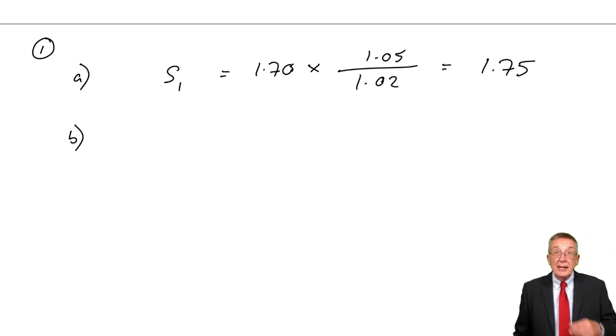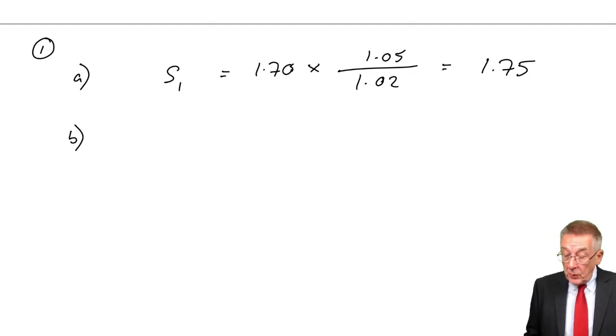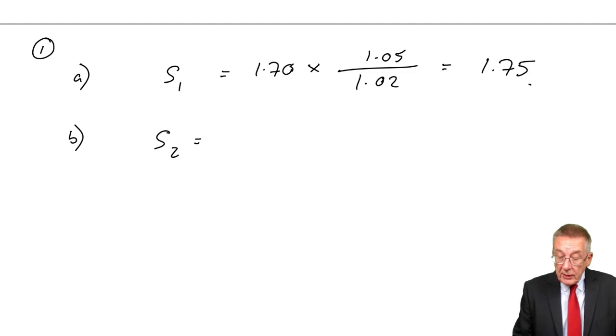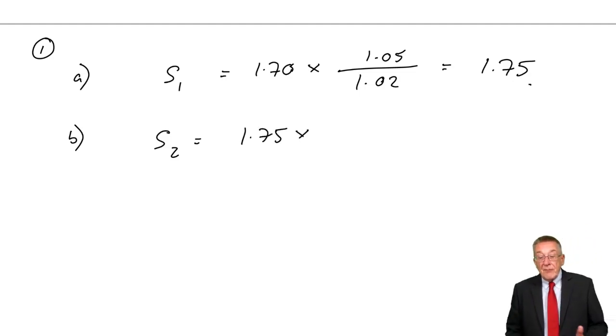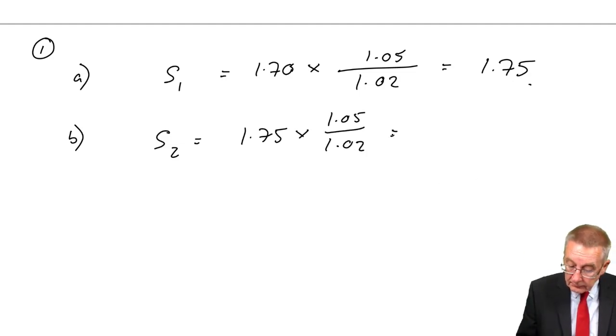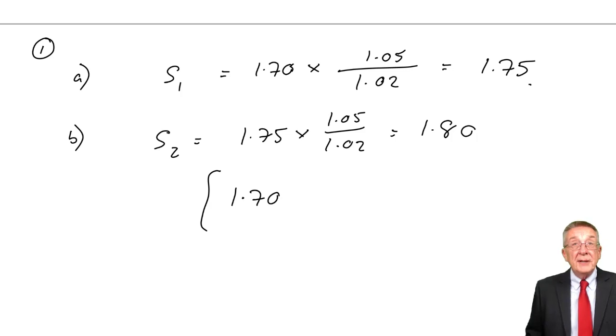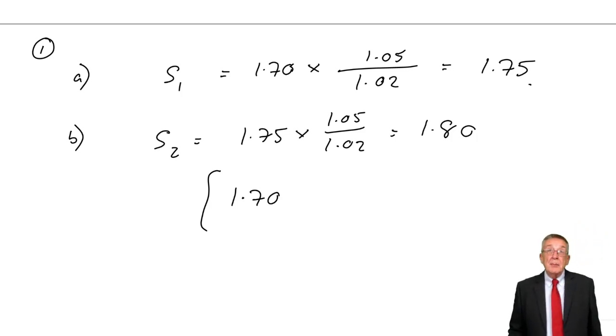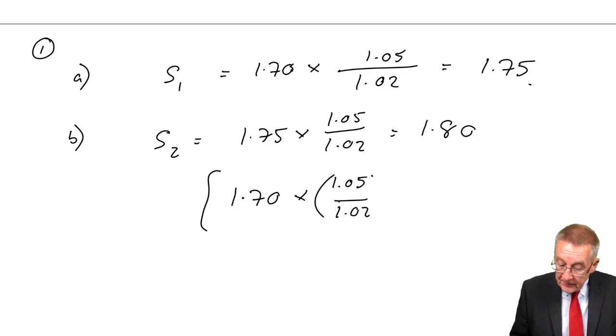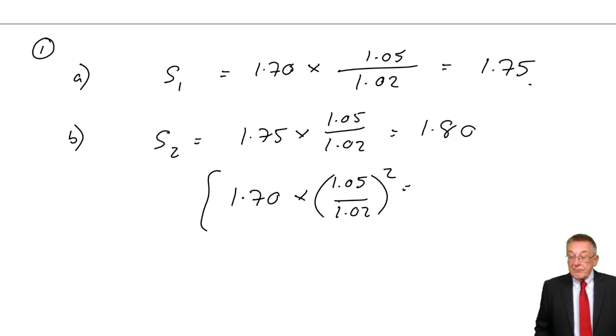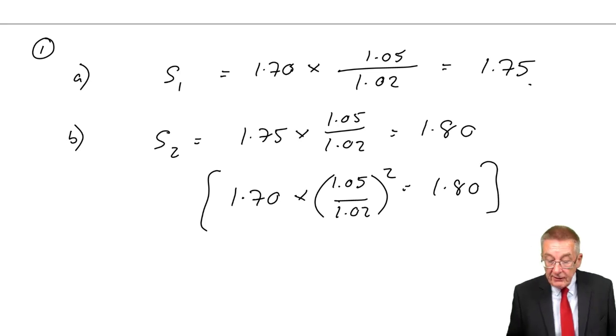So there's the forecast exchange rate in one year's time. The question also asks the exchange rate in two years' time. Assuming that the rates of inflation stay the same, you can get the same answer two ways. The exchange rate in two years' time, in one year's time it's 1.75, but then another 1.05 over 1.02 gives us 1.80. Or if you prefer, you could have started from today's exchange rate. In two years' time, multiply twice, so 1.05 over 1.02 squared. That should be exactly the same, and give us 1.80.